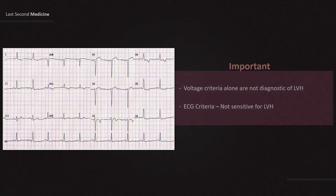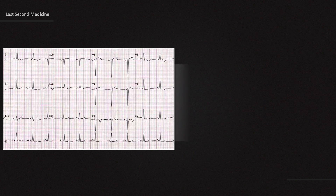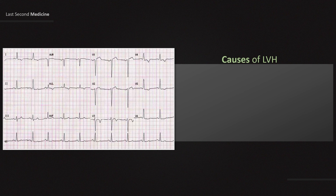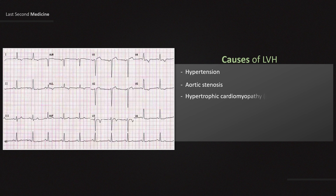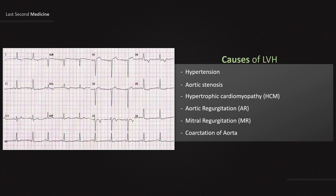What conditions lead to LVH? The most common cause is hypertension. Other causes include aortic stenosis, hypertrophic cardiomyopathy, aortic regurgitation, mitral regurgitation, and coarctation of the aorta.